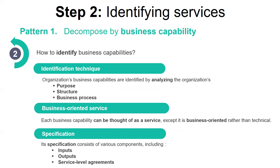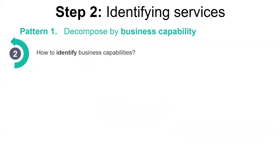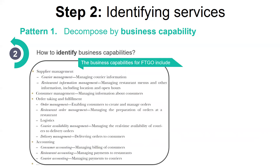For example, the input to an insurance underwriting capability is the consumer's application, and the outputs include the approval or the price. A business capability often focuses on particular business objects, but sometimes it can be decomposed into sub-capabilities. The top-level business capabilities of the food-to-go application include supplier management, consumer management, order taking and fulfillment, accounting, and so on.